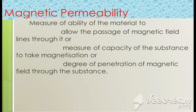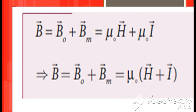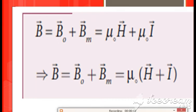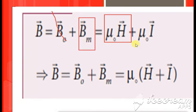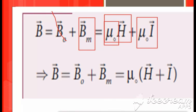Next: B = B₀ + Bm, where B₀ is the magnetic induction due to vacuum and Bm is due to the medium. This can be written as μ₀H + μ₀I. Bringing μ₀ outside gives B = μ₀(H + I). So the equation for magnetic induction is B = μ₀(H + I).